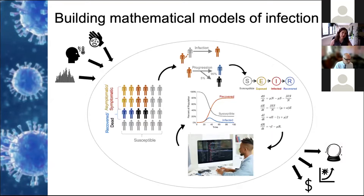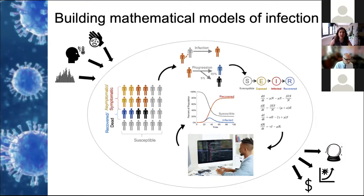But in order for these models to make useful predictions, they must encode important information about the specific disease of interest. For example, we need to know how a disease is transmitted, how long between when someone is infected and when they become contagious, how likely someone is to require hospitalization, or how long immunity lasts after infection. The output of a model is only as good as the input, and so some of the most difficult parts of model building is finding reliable data sources to put into these models.